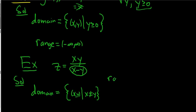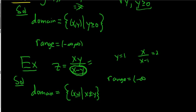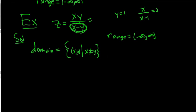As for the range, it can be any real number. If you make y = 1, you get x / (x - 1), and using this you can produce any number — you can set it equal to 2 and solve for x. So the range here is all real numbers. Most of the time that's the case, but not always — in the next example, you'll see that it is not.